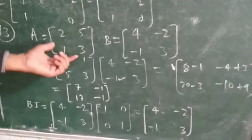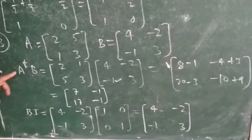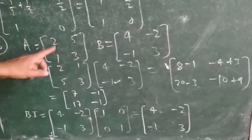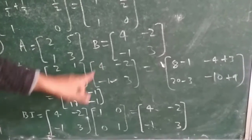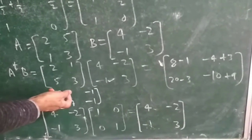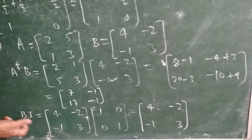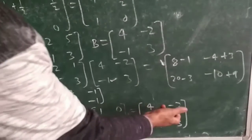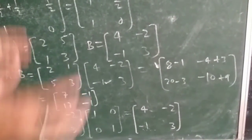Question number 13: A = [2, 5; 1, 3], B = [4, -2; -1, 3]. First we find A-transpose: converting rows into columns gives A^T = [2, 1; 5, 3]. B remains the same. Now multiply A^T into B: 2×4+1×(-1) = 7, 2×(-2)+1×3 = -1, 5×4+3×(-1) = 17, 5×(-2)+3×3 = -1. So A^T·B = [7, -1; 17, -1]. Now find B·2I: multiply B by the 2×2 identity matrix [1,0; 0,1] to get [4, -2; -1, 3]. After adding them, you will get your final answer.